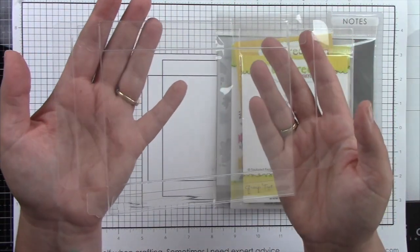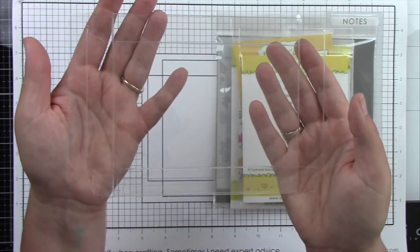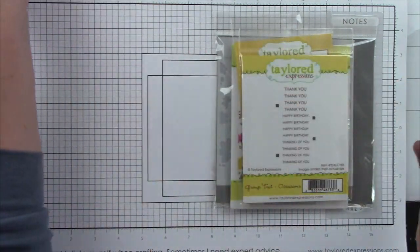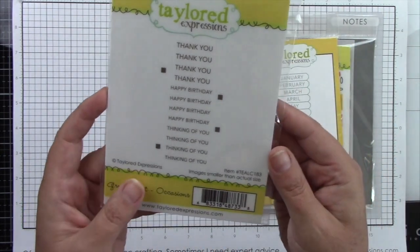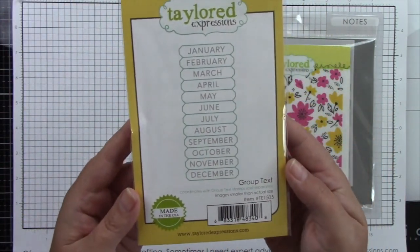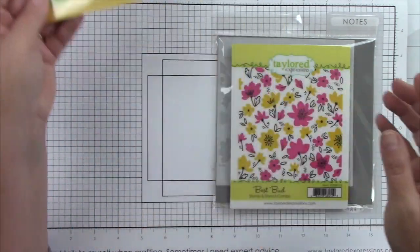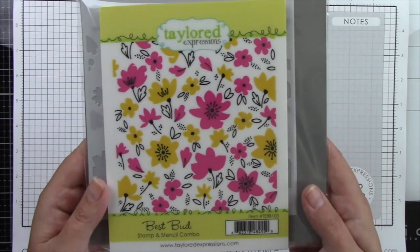Then the clear card box. This is the packaging that's going to hold all of your cards and envelopes that you're going to be gifting. Then I'm using the group text stamp and coordinating die and the best buds stamp and coordinating stencil. It's the combo stamp and stencil.